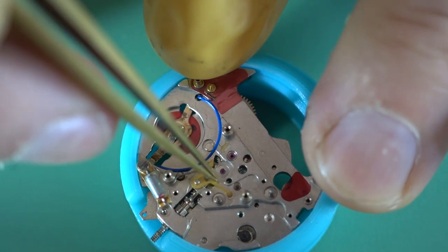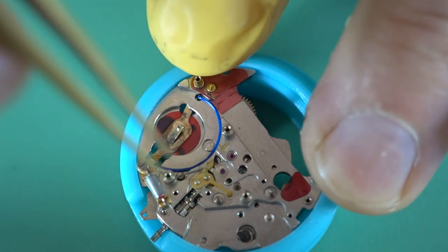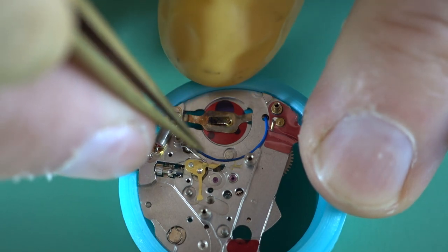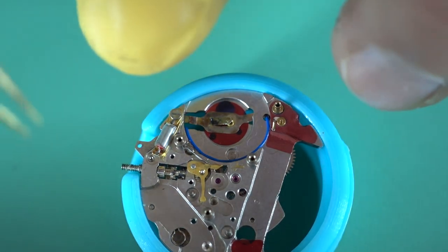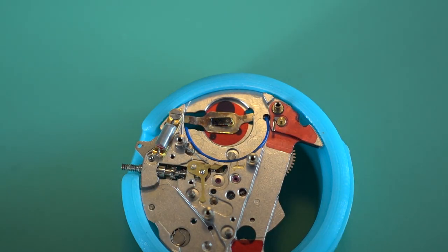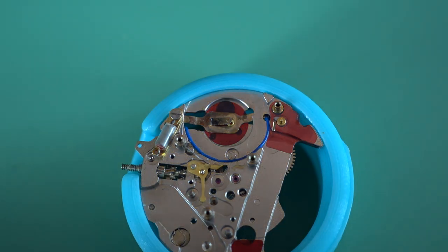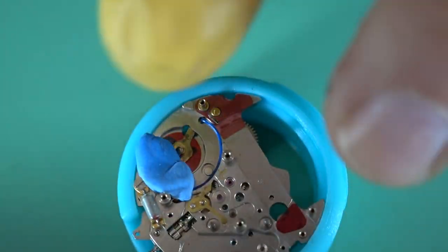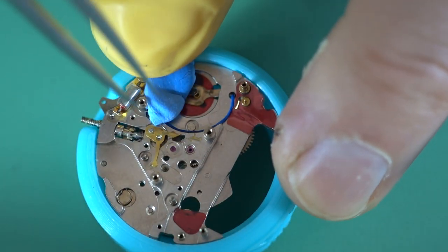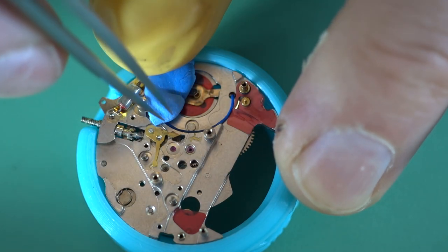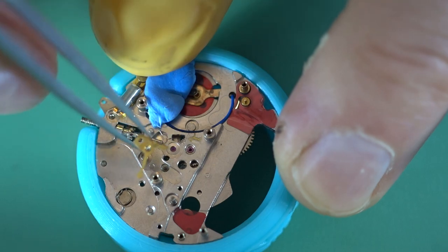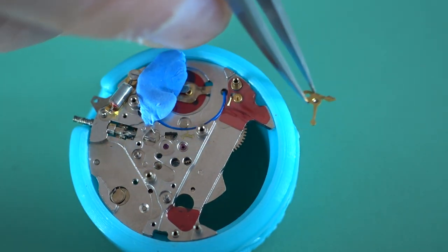And that's pretty much all that's on the main plate there. So I'll just take off the hacking lever. Now there's a spring for this just there, which makes it a little bit tricky. I'm just going to get some Rodico just to make sure that doesn't fly off. I'm just going to use my normal tweezers here. There we go. So we'll remove one hacking lever.